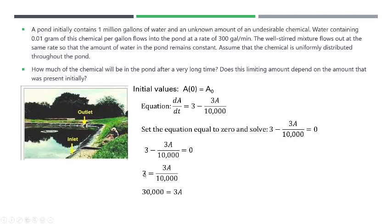So I set 3 minus 3A over 10,000 equal to 0, and then solve. I just brought the 3A over 10,000 to the right, multiply both sides by 10,000. 3 times 10,000 is 30,000, and then divide by 3, and you get A is 10,000.